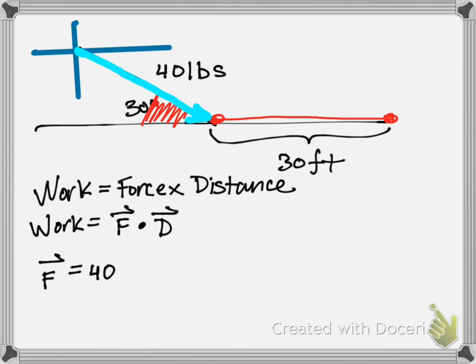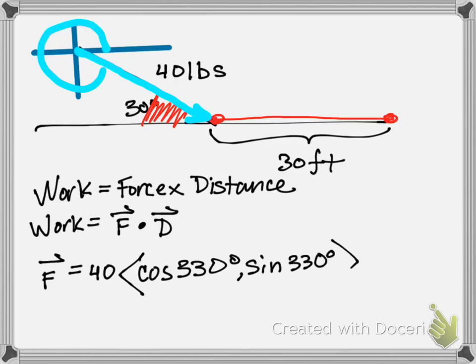The magnitude is 40, and then I need the direction angle. A vector angle is done the same way as a trigonometric angle. So the angle is there. If this is 30 degrees there, then this angle is 330 degrees. So this is cosine 330 degrees, sine 330 degrees, and that is the force vector.